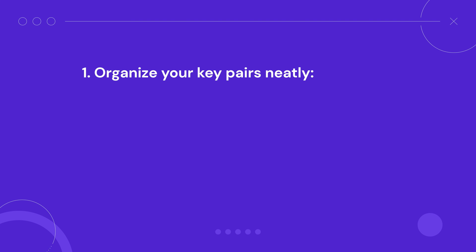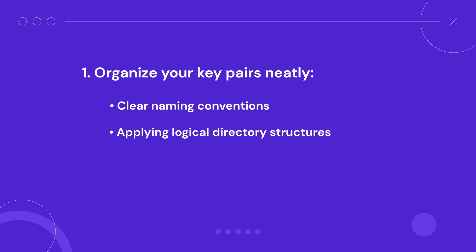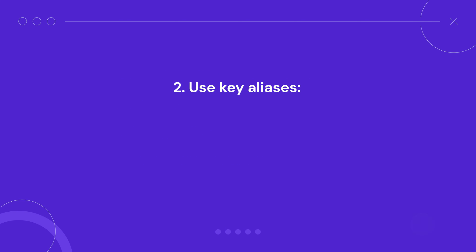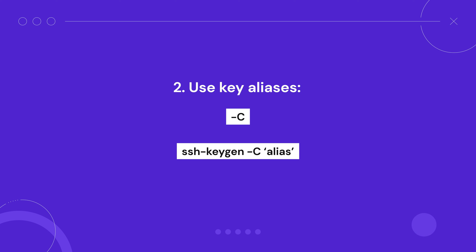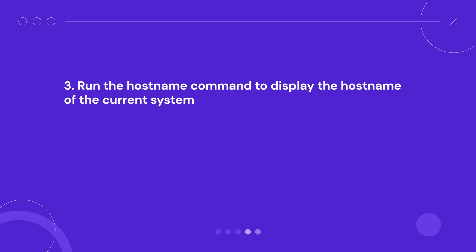Practicing this means you can keep multiple SSH keys, so there are more points to keep in mind. Organize your key pairs neatly using clear naming conventions, logical directory structures, and proper permissions so each SSH key pair is easily identifiable. Use key aliases to help distinguish each key's purpose or associated project — during key generation, you can add the -C flag to specify the alias. You can also run the hostname command to display the hostname of the current system, which helps ensure you select the appropriate key for the chosen host. Lastly, adjust the SSH settings for specific hosts using the SSH configuration file, which lets you define which SSH keys to use for certain hosts or domains, minimizing the risk of using the wrong key during login.